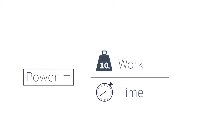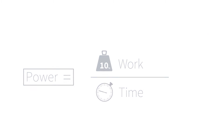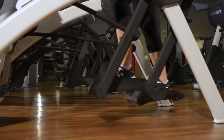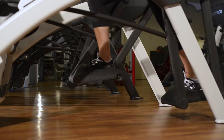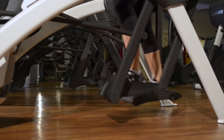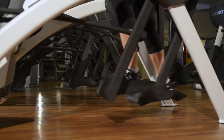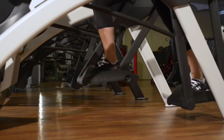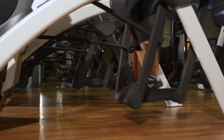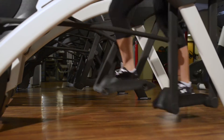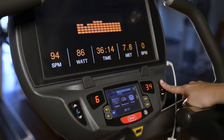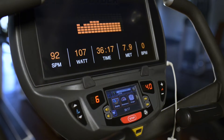Power is one way that we can quantify the intensity of a workout. For example, on the arc trainer you apply a force to the footplate and it travels a certain distance over a length of time. The length of time varies based on your speed — the number of steps you take per minute. In order to increase power, you must increase resistance or speed, or ideally both.